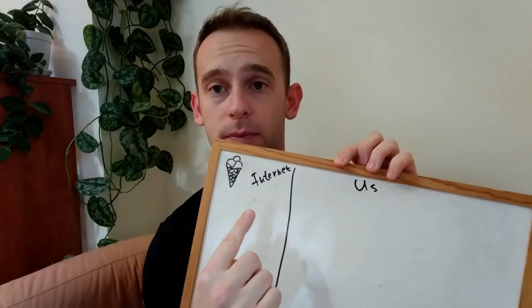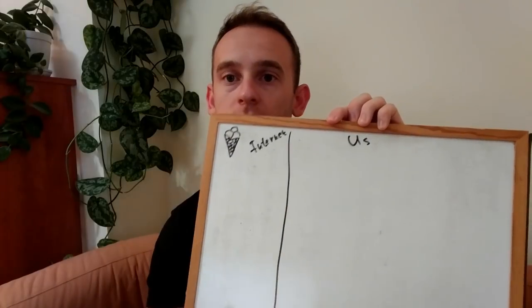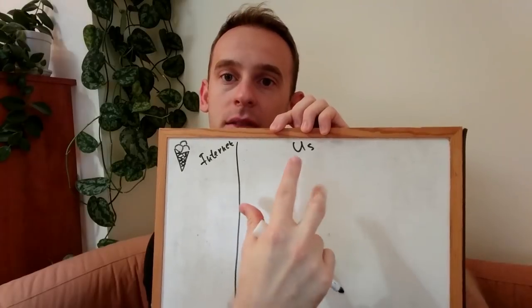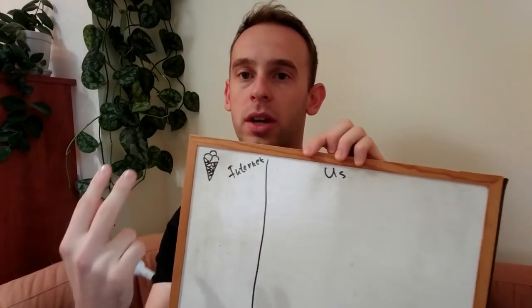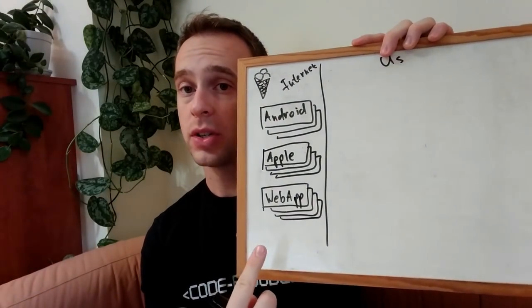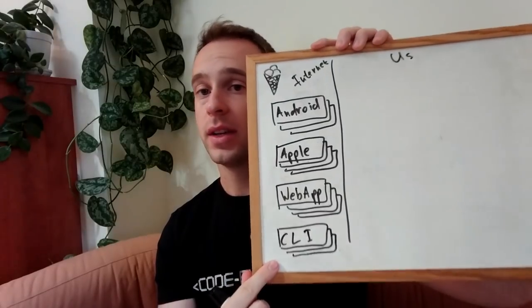We will have the internet, which will be ordering the ice creams, and we will have our servers that will allow the ice cream to be ordered. We will have a few clients that will be able to order the ice cream: Android apps, iPhones, web applications, and a CLI. You can imagine some programmer sitting in front of his computer ordering ice cream from the command line.